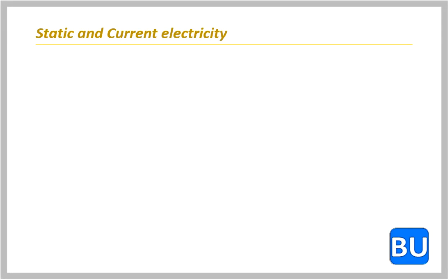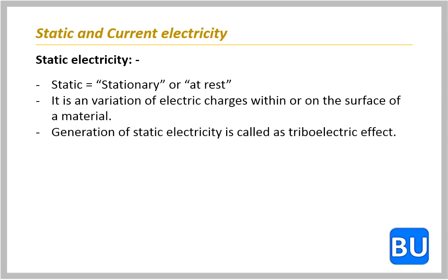Now we will discuss the two forms of electricity, static and current electricity. The static electricity is a variation of electric charges within or on the surface of a material. This is called as triboelectric effect.